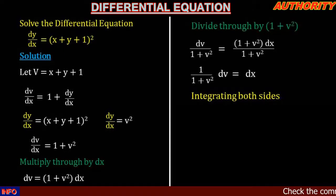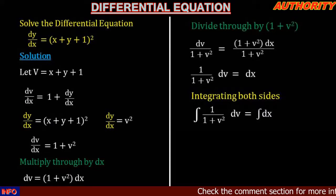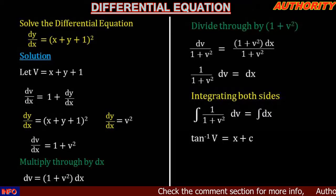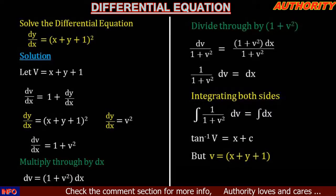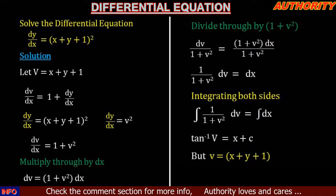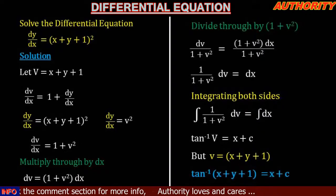Integrating both sides, the integral of 1/(1 + v²) dv equals the integral of dx. The left-hand side gives us arctan(v), and the right-hand side gives us x + c. Since v = x + y + 1, we replace v to get arctan(x + y + 1) = x + c.